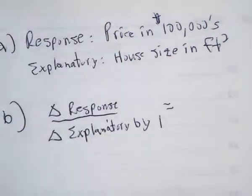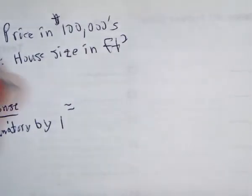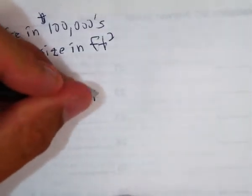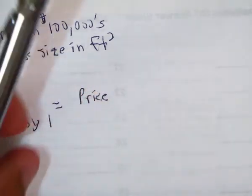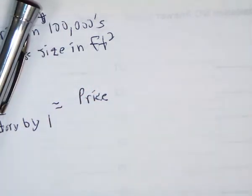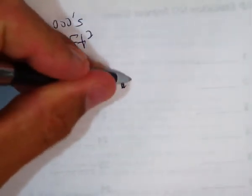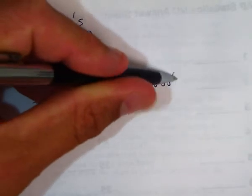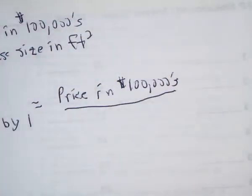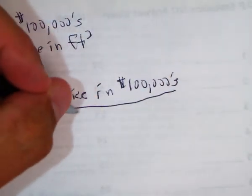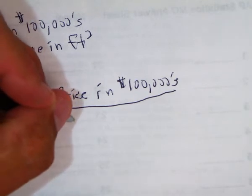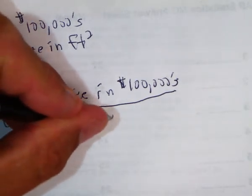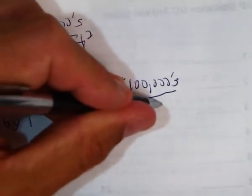So, our response variable is price in hundreds of thousands of dollars as the size of the house increases by one square foot.